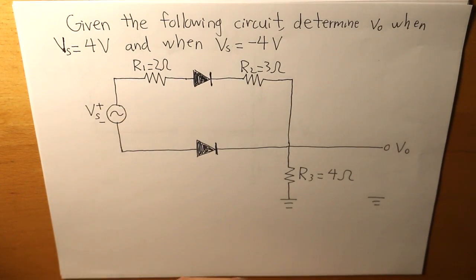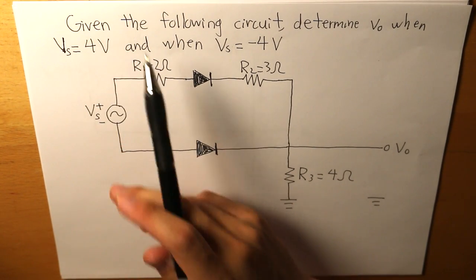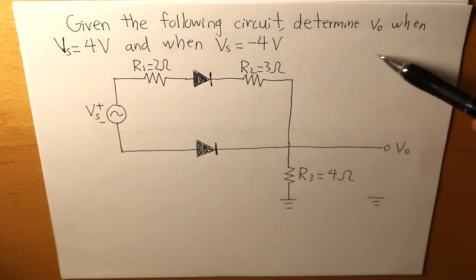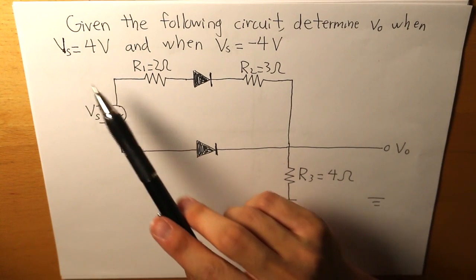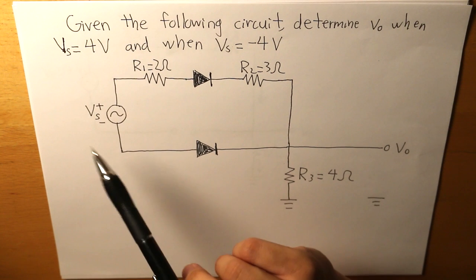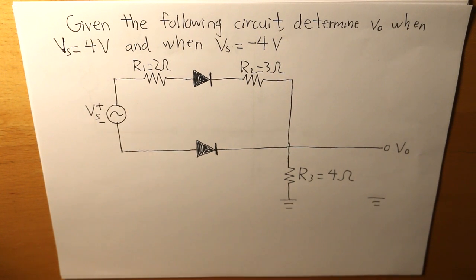And in this question, it states, given the following circuit, determine the output voltage when the voltage source is equal to 4 volts and when the voltage source is equal to negative 4 volts.